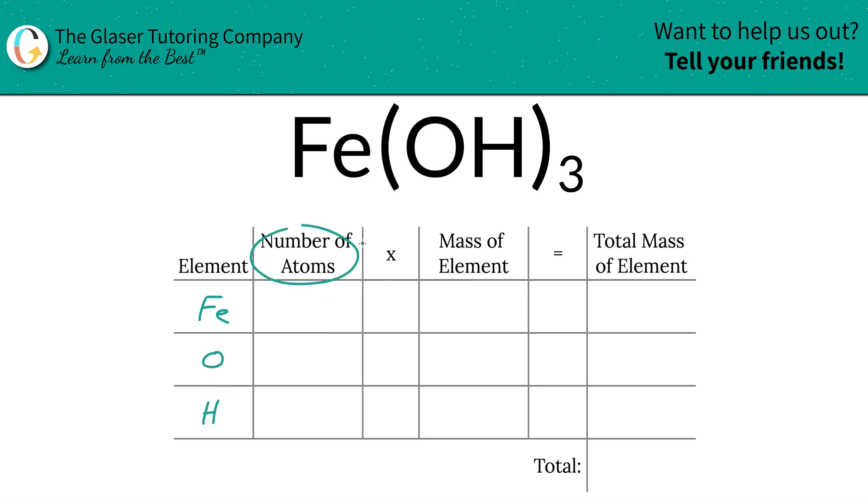Then we're going to take into account the number of atoms. That's where the subscripts come into play. If there's not a subscript there, it is assumed to be one. So there's one iron, there's also one oxygen, but you got to be careful—oxygen is tied up in the polyatomic anion hydroxide and you have three of them.